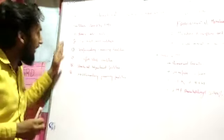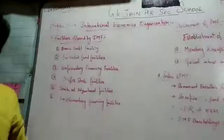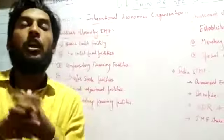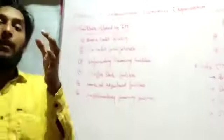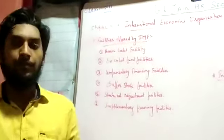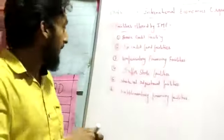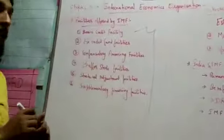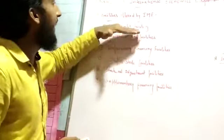These are the various facilities offered by the IMF. You are giving control, providing perfect assistance — but what benefit are you giving? Being an institution, just protection is not enough. It gives the following six benefits. Number one: basic credit facility.